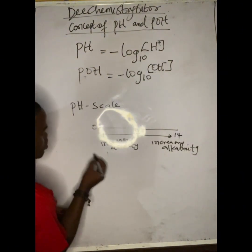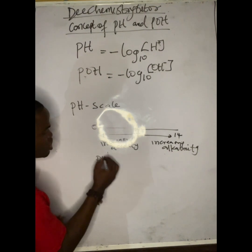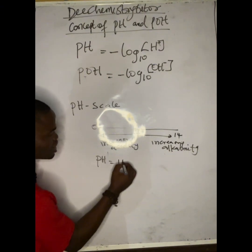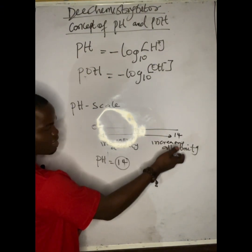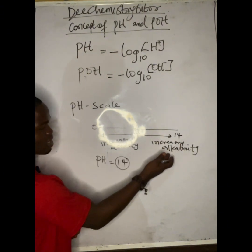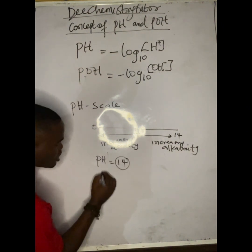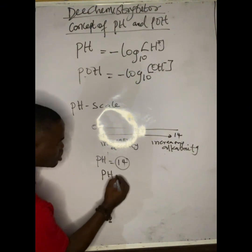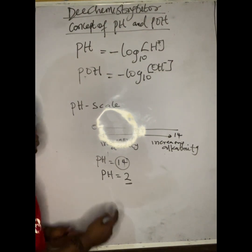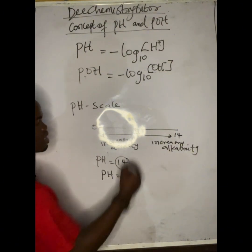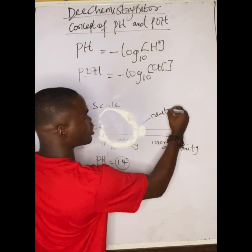A solution with a pH of fourteen is more alkaline. If a solution has a pH of two, it is tending towards acidic. A pH of seven means the solution is neutral.